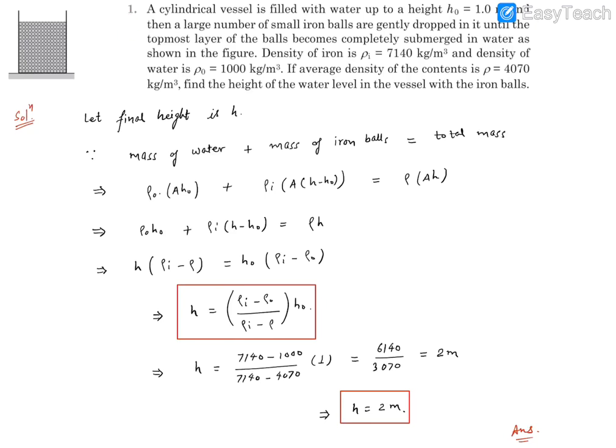Question number 1. A cylindrical vessel is filled with water up to height H0 which is 1.0 meter, and then a large number of small iron balls are gently dropped in it until the topmost layer of the balls becomes completely submerged in water as shown in the figure.